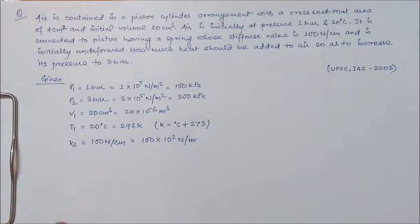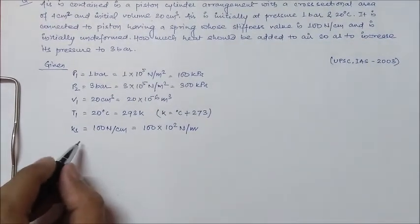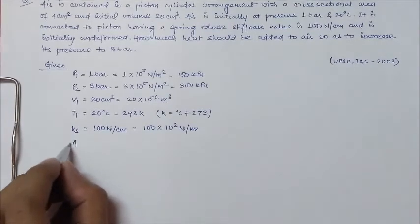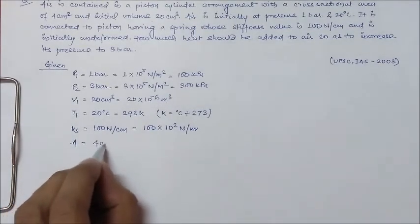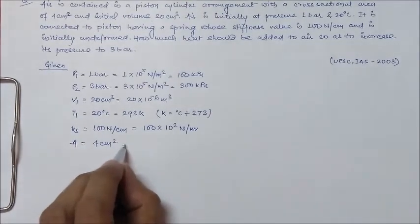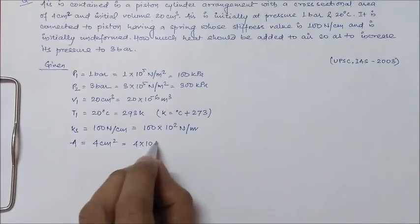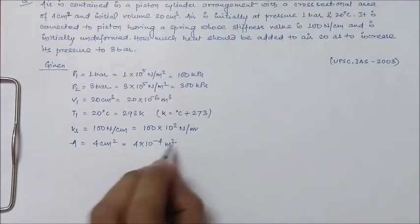We have T1, initial temperature, as 20 degree celsius, and if we convert it into Kelvin it will be 293 Kelvin, because Kelvin equals degree celsius plus 273. The stiffness value Ks is given as 100 N per cm, or it can be written as 100×10² N per meter.